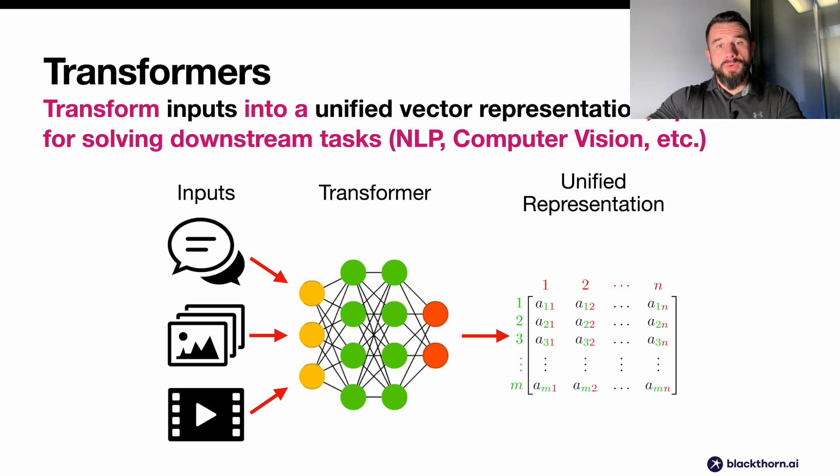These models are known as transformers because they transform inputs such as text, images, video, or audio into a corresponding set of vectors with the same dimensionality. The goal of the transformation is for the new unified vector representation to have a richer internal representation that is better suited for solving downstream tasks such as classification, summarization, chatting, and text generation, object detection, and others.